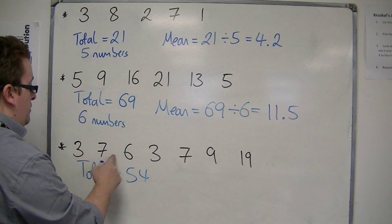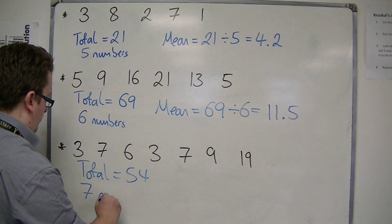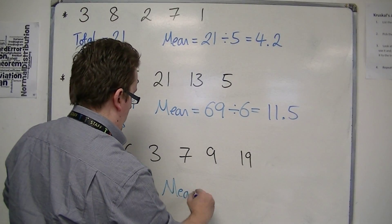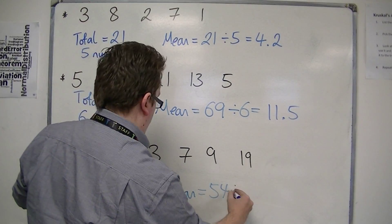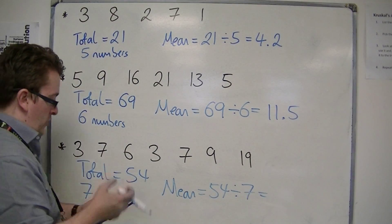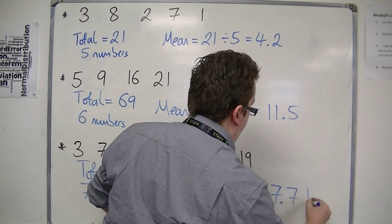And we have 1, 2, 3, 4, 5, 6, 7 numbers. So the mean is 54 divided by 7, which is 7.7 to one decimal place.